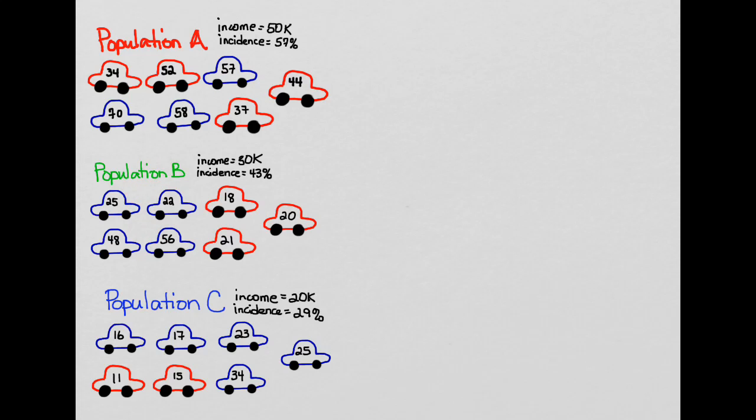So B you see that the incidence is lower, 43%, and C incidence is even lower, 29%. Income is lower in this population C relative to B and A.